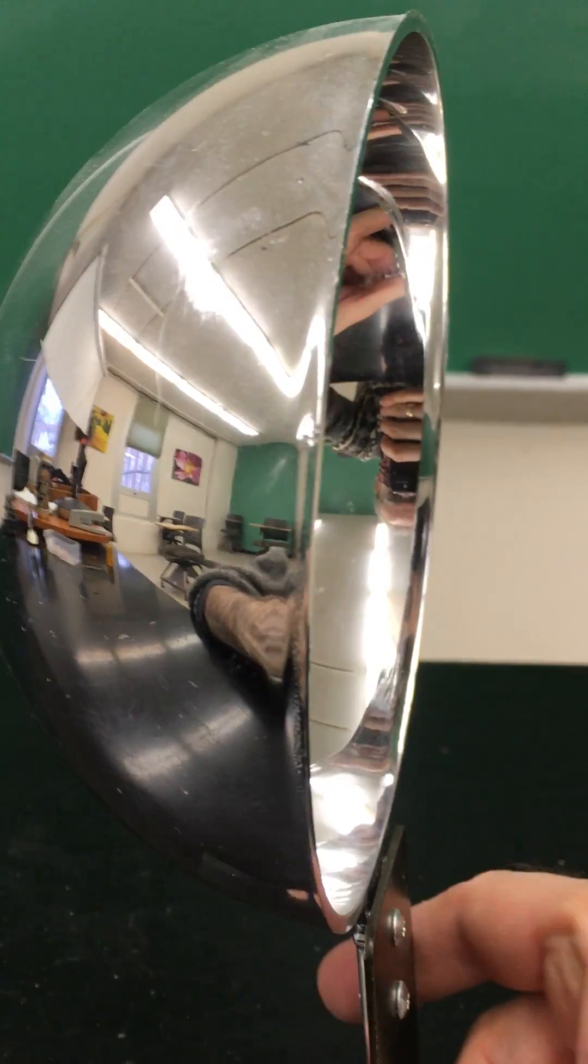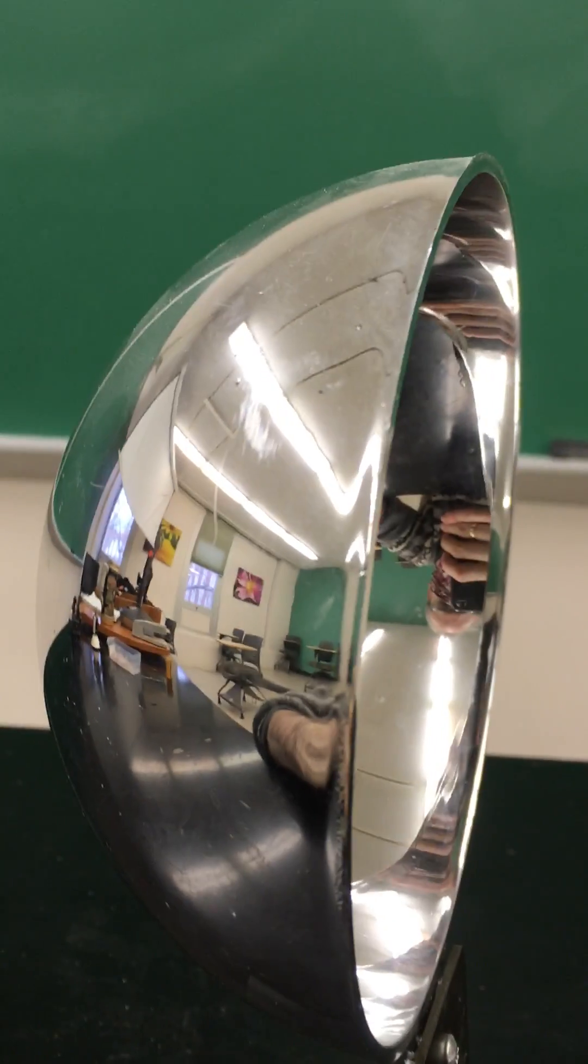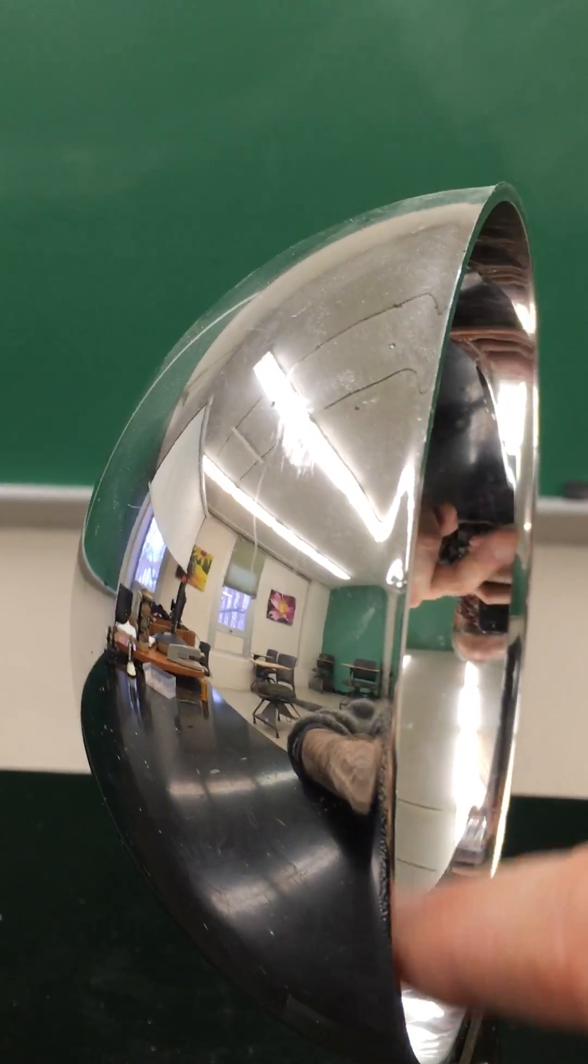All right, let's look at non-flat mirrors, spherical mirrors. Here I have actually two of them. I have a hemispherical shell here that's shiny on both sides.